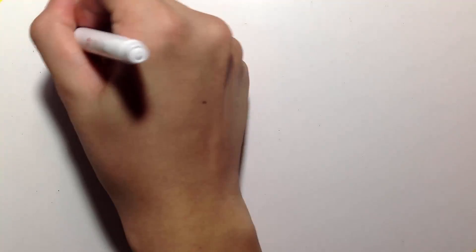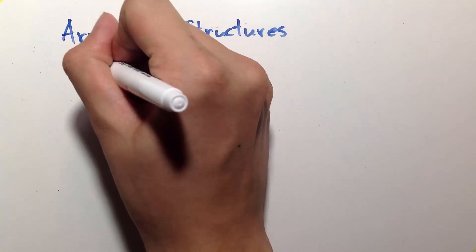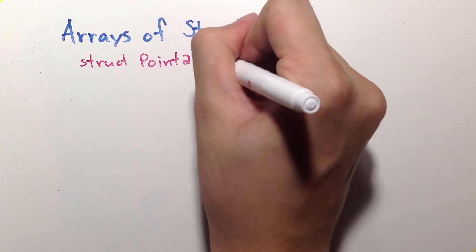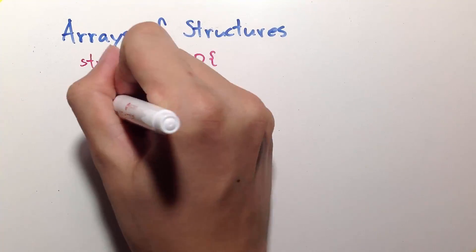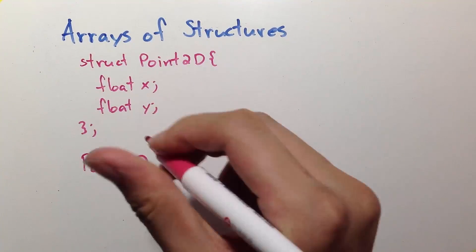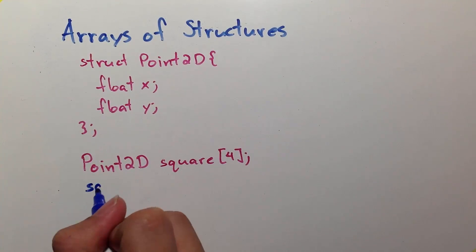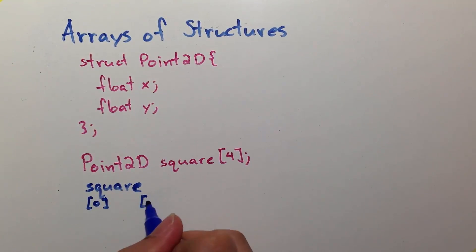Now, let's have arrays of structures. Let's have the structure again, struct point2d having two children, x and y, both being float. Now, let's create an array of struct point2d called square, which has a size of 4. Now, what does that look like in memory? So, square, we start with the variable name, the array name, has 4 elements, as you can see,